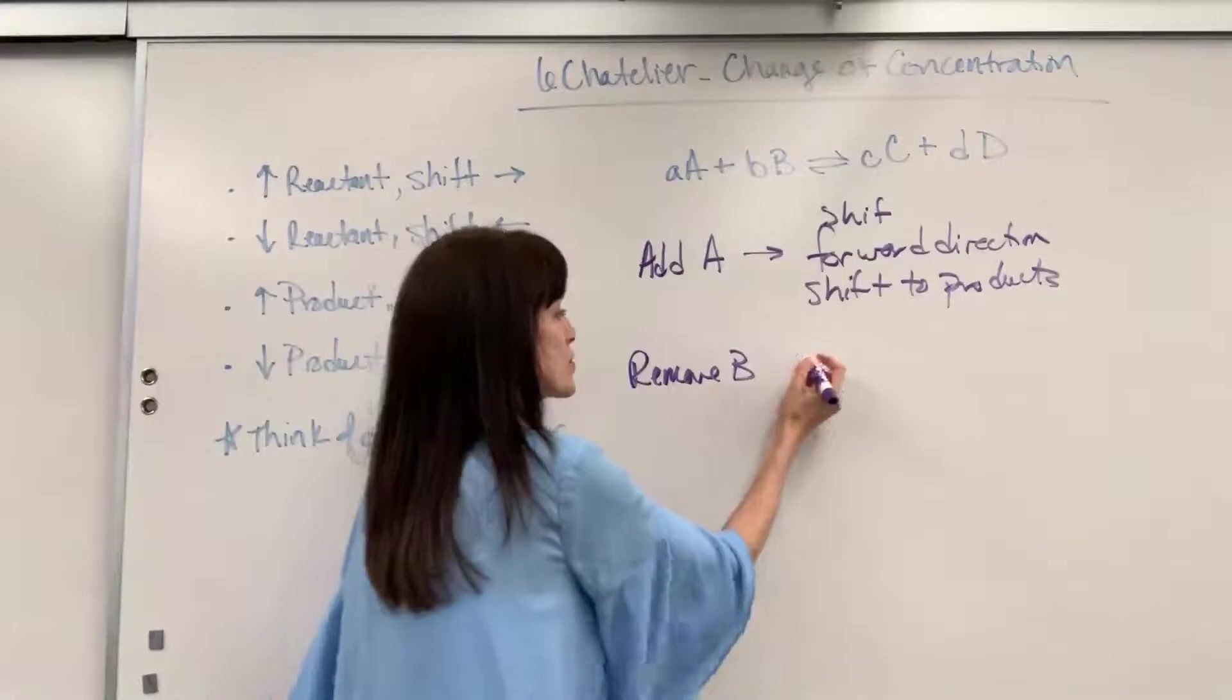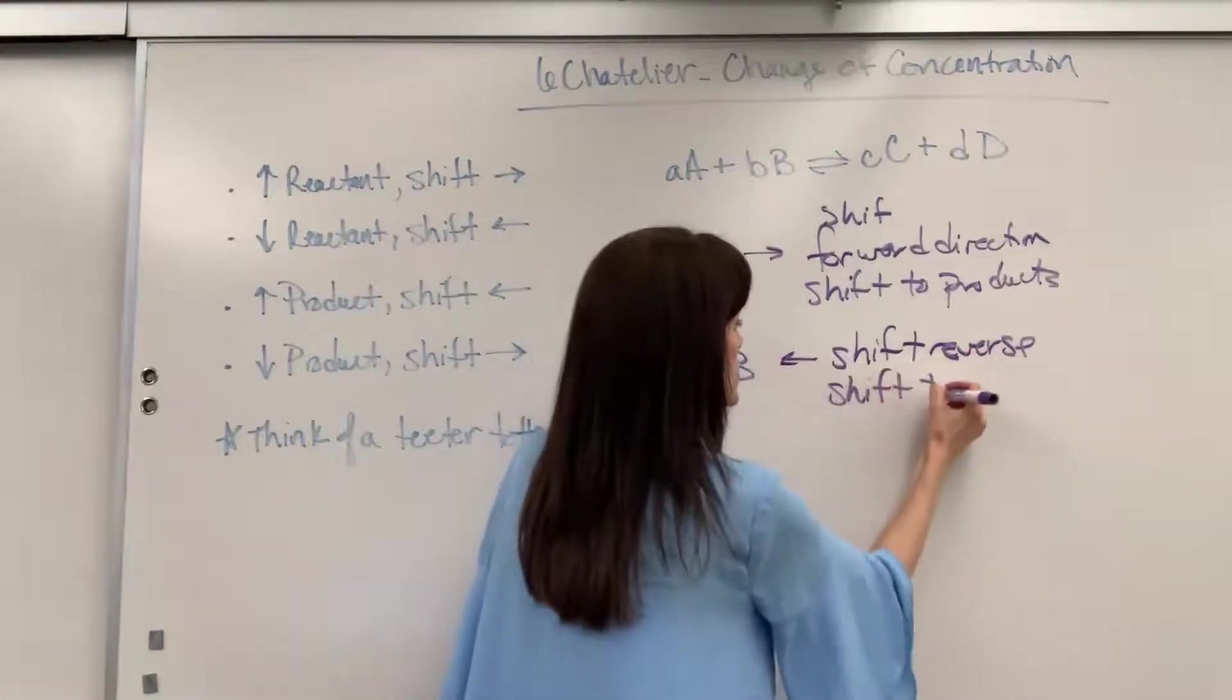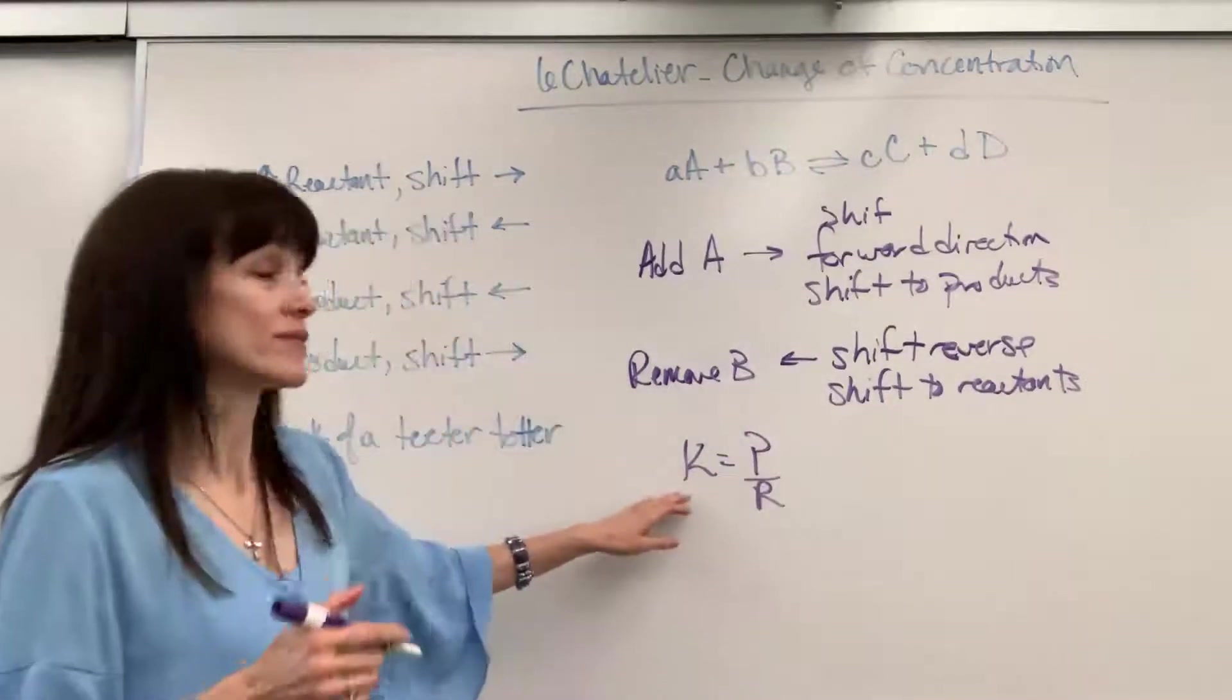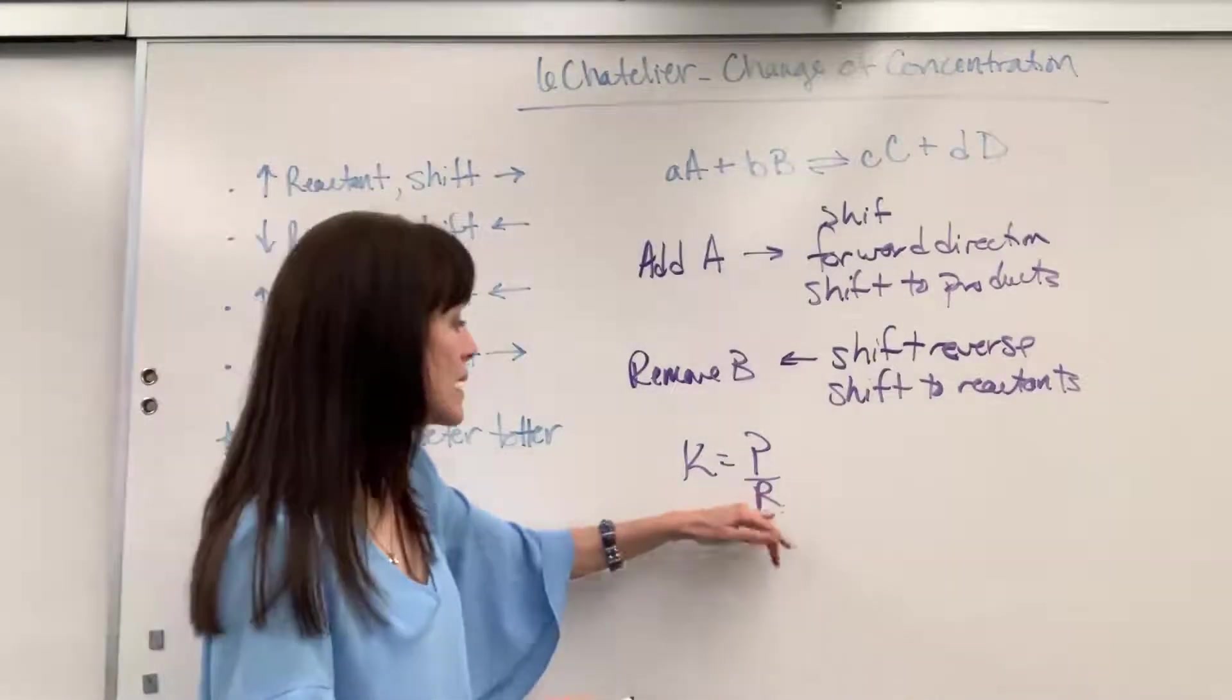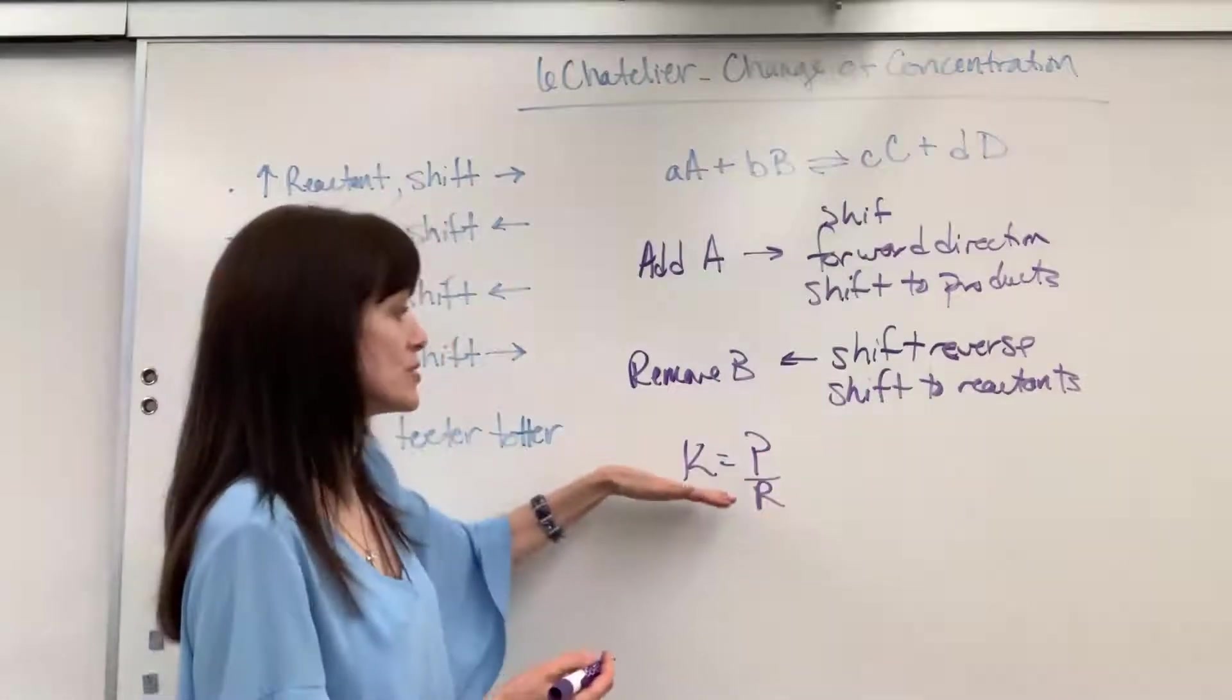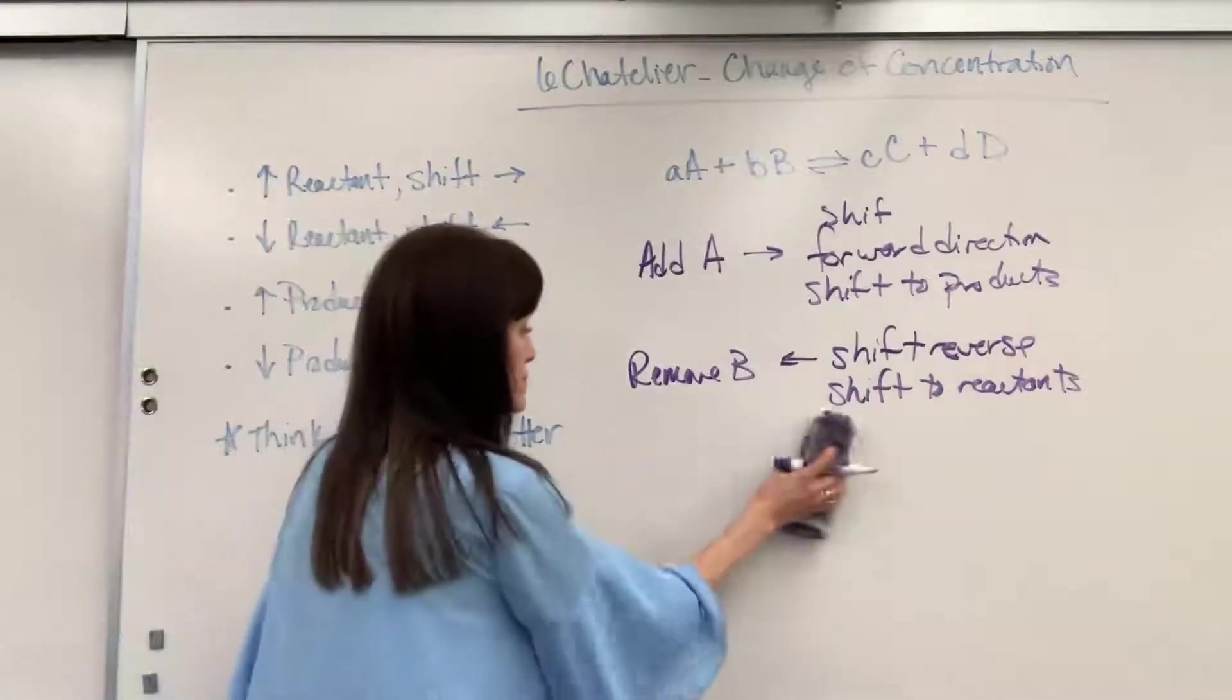So this is going to shift reverse. Another way that you could say that is it's going to shift to reactants. Now attaching this to mathematics, come back to our equilibrium expression of products over reactants. We have to maintain that ratio. If I take out some of that reactant, the number is going to be too small on the denominator. We're going to have to consume some of that product and we have to add some reactant to bring it back into the value. That's the ratio at equilibrium, equal rates. So mathematically, that's what's going on.